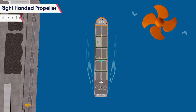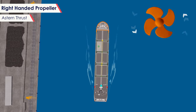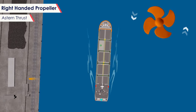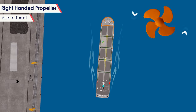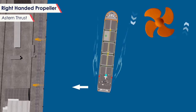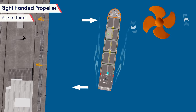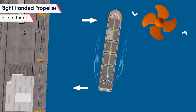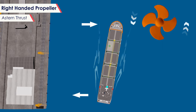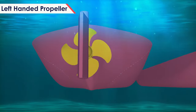On a ship with a right-handed propeller with a stern thrust, the propeller will be turning anticlockwise. As a result of the transverse thrust, the stern will walk to port and, with a twist around the pivot point, the bow will go to starboard.